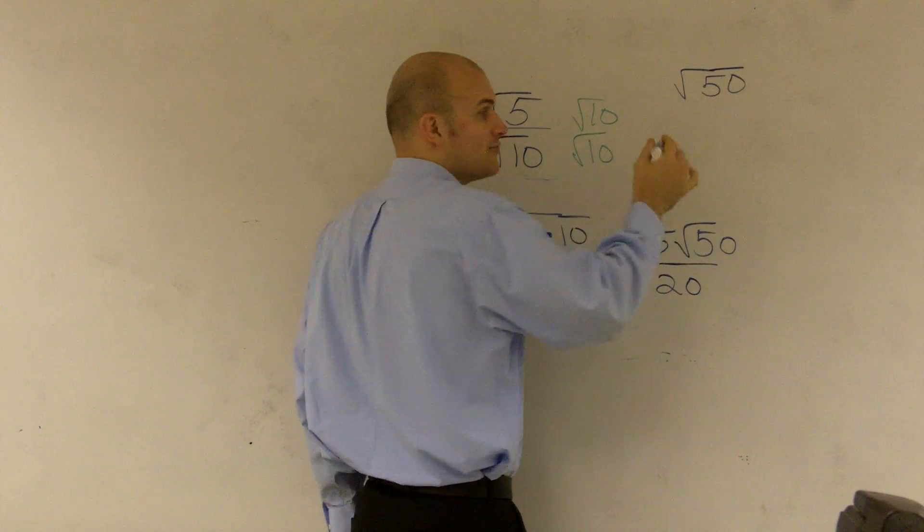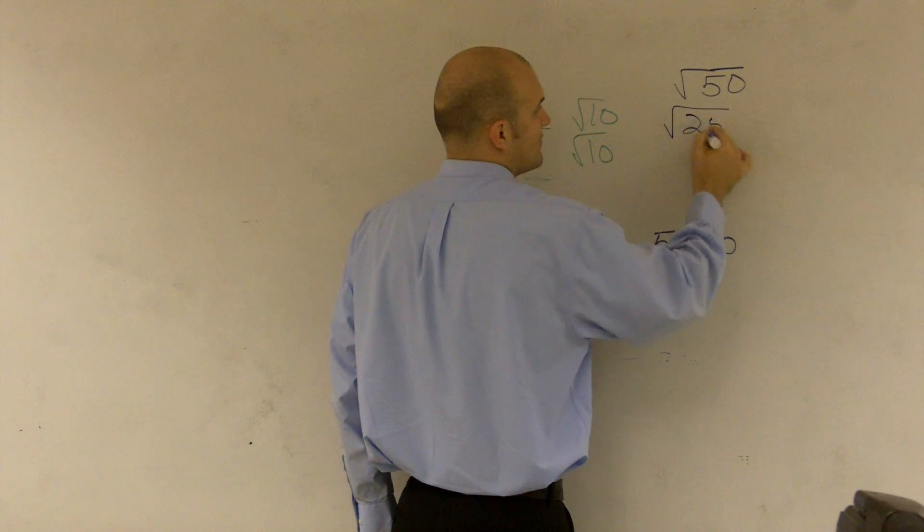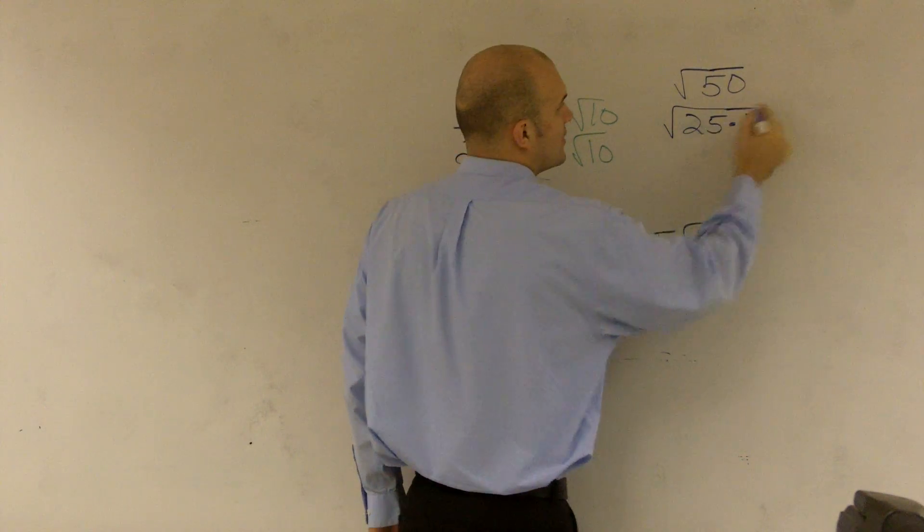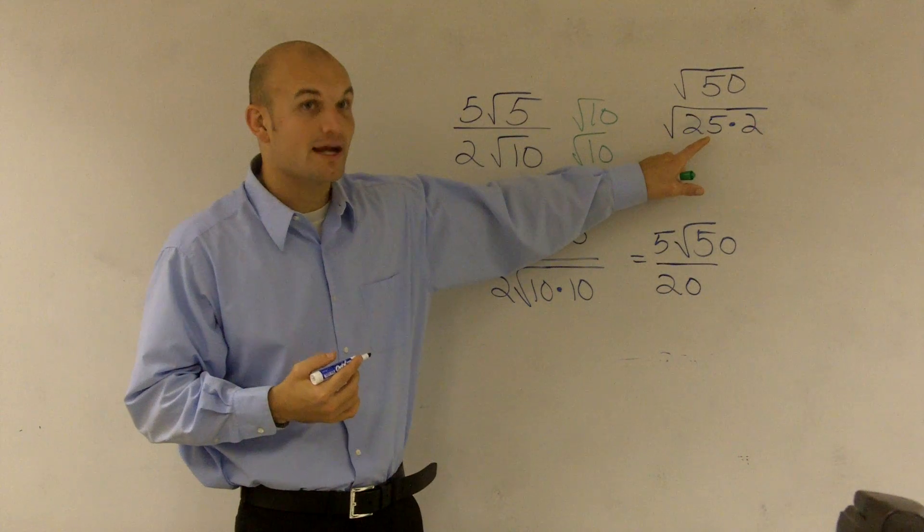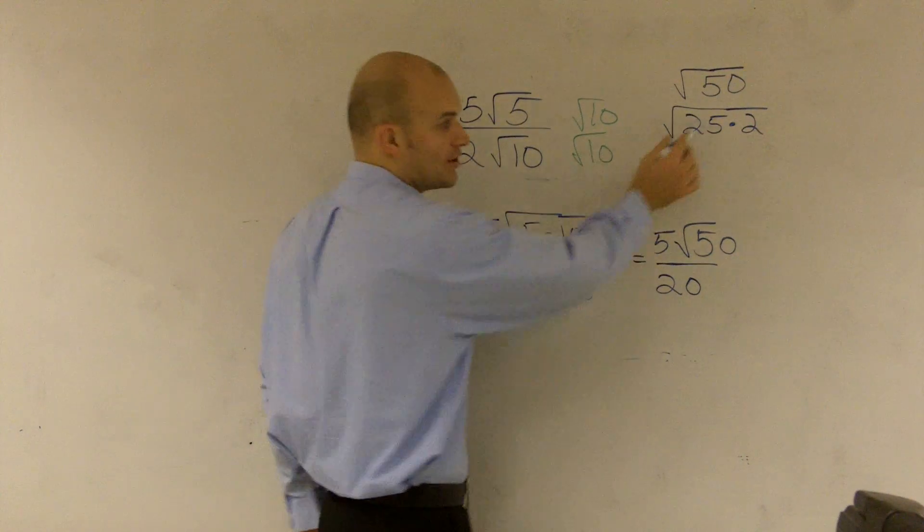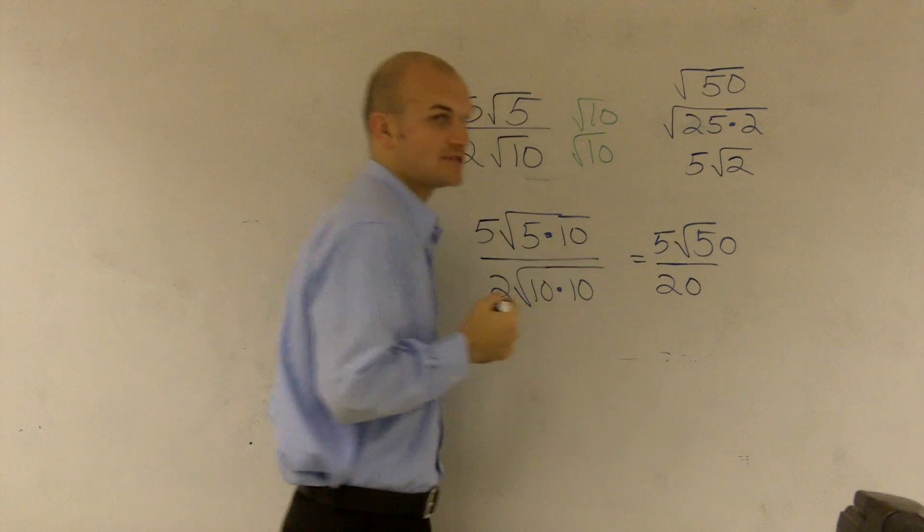Now, if I was going to do this, I'm going to rewrite the square root of 50 as 25 times 2. The reason why I rewrite it as 25 times 2 is because I can take the square root of 25. I know that's a square number. The square root of 25 is 5. There is no square root of 2. So that's where I got that.